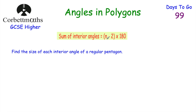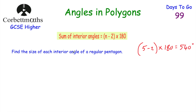Let's look at another question. Find the size of each interior angle of a regular pentagon. We know the angles add up to 540 degrees — either from memory or using (5−2)×180 = 3×180 = 540 degrees. Because it's a regular pentagon, all angles are the same size, so we divide 540 by 5, which equals 108 degrees. So each interior angle of a regular pentagon is 108 degrees.